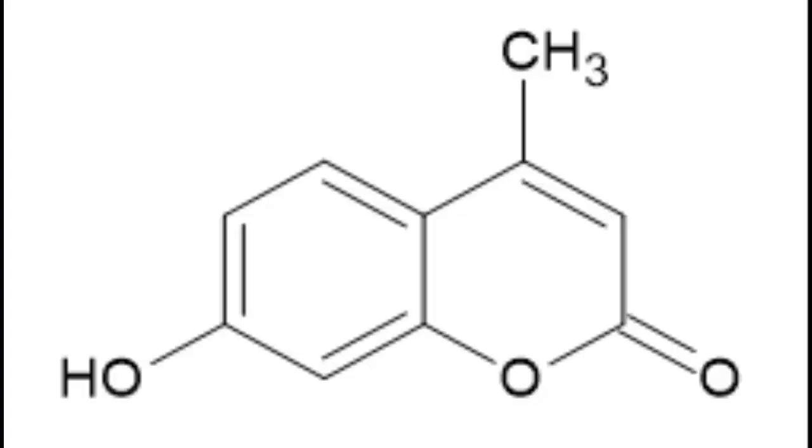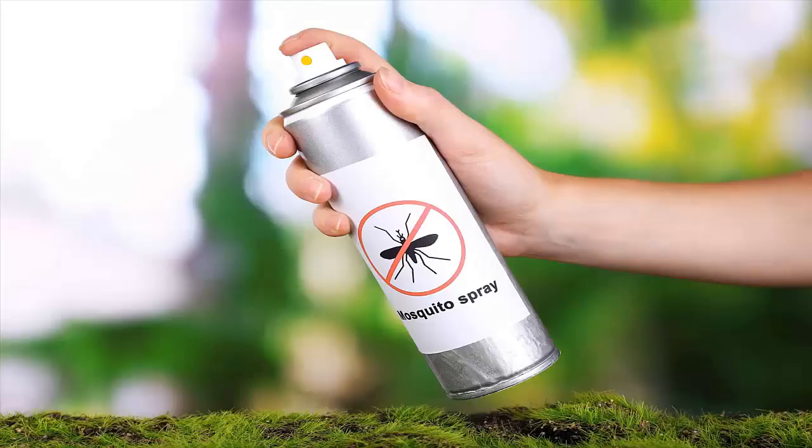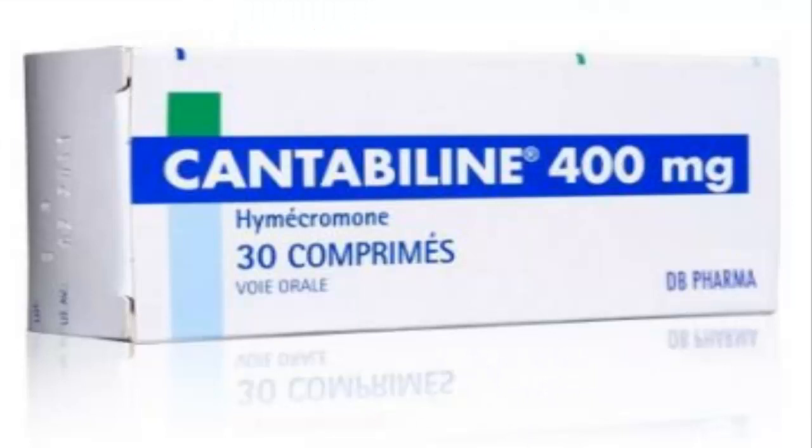7-hydroxy-4-methylcoumarin or hymecromone is used as an insecticide and in the manufacture of drugs for the treatment of bile or as an anticoagulant.